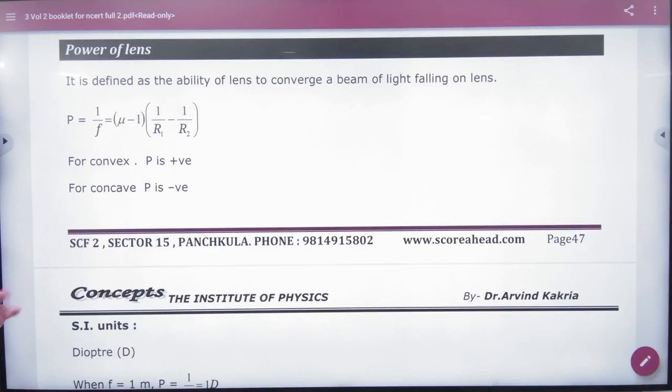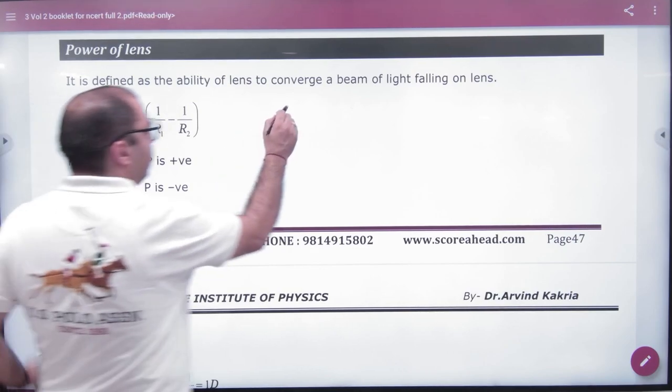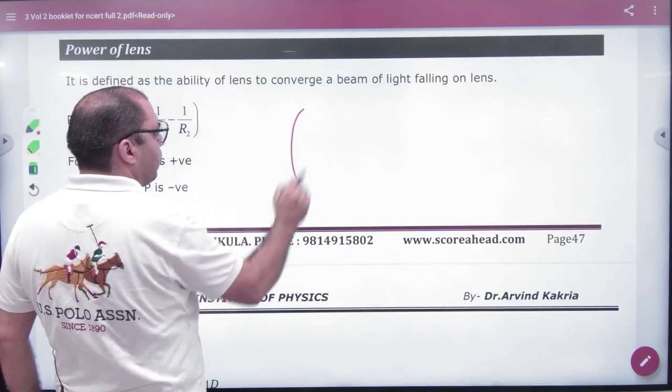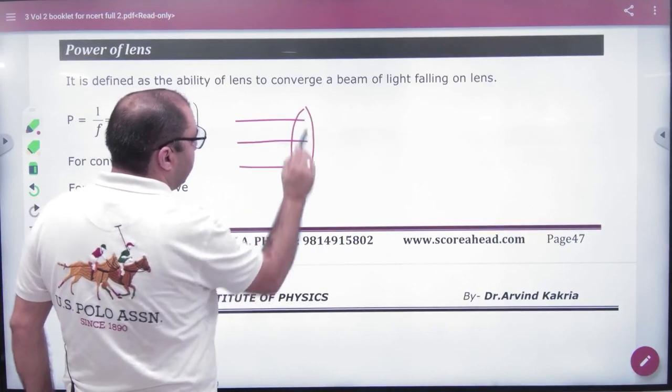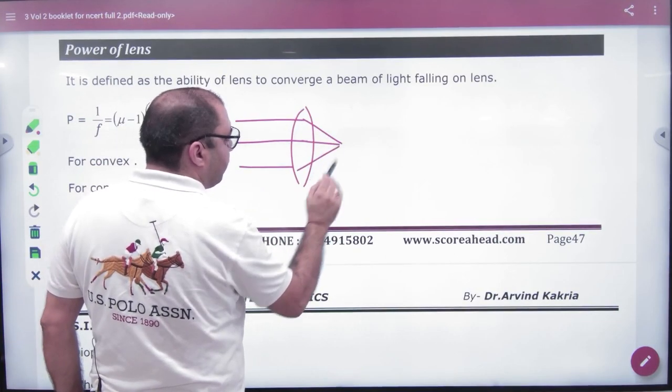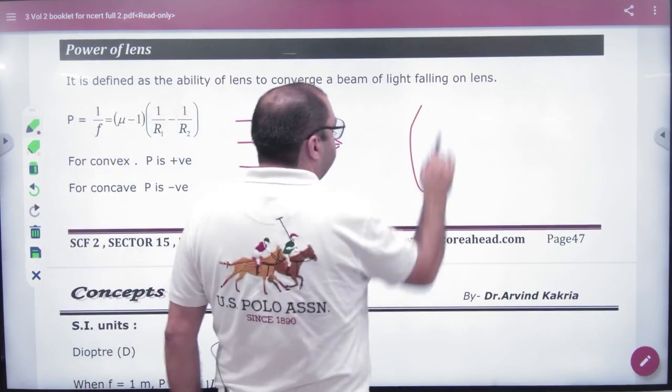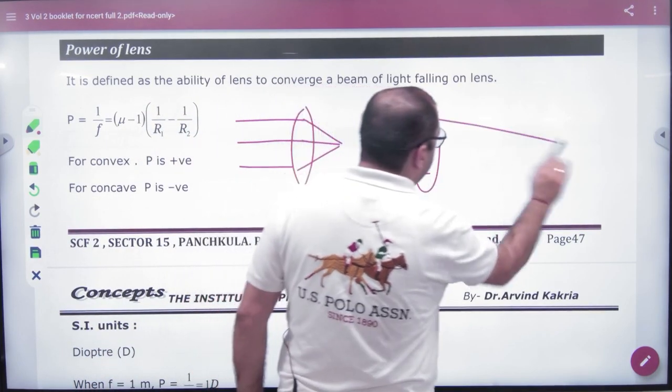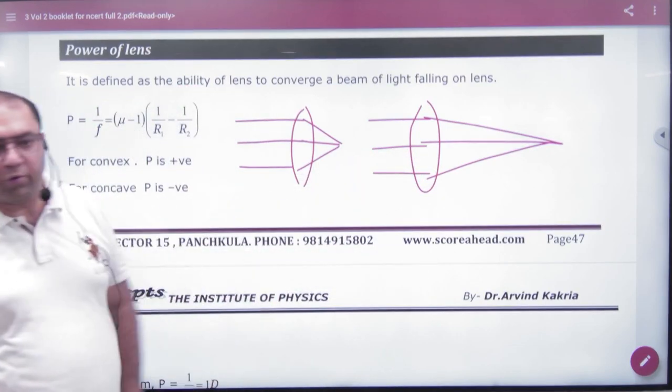Power of the lens - what is power of the lens? Let's explain it with an example. Consider a convex lens where a ray is straight. Any convex has focused on it here. Another convex lens has a ray that's straight, and where is it focused? It's focused here.